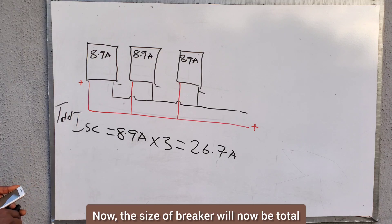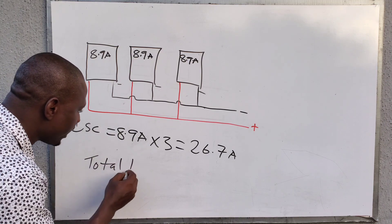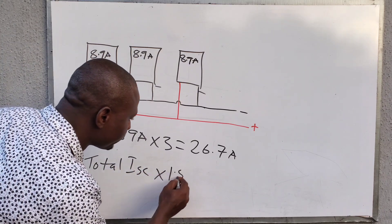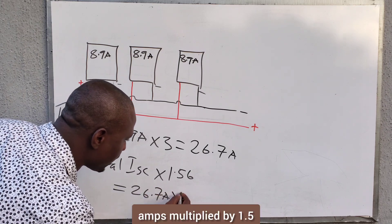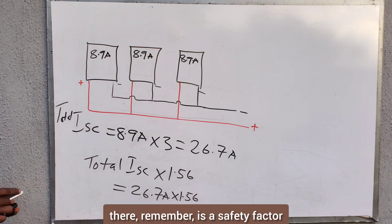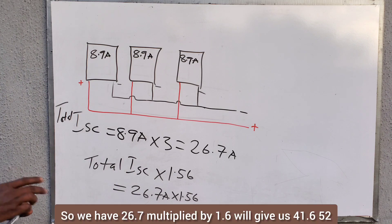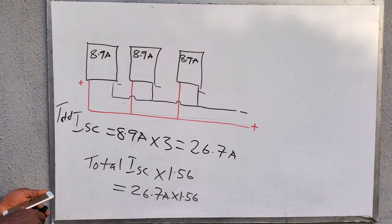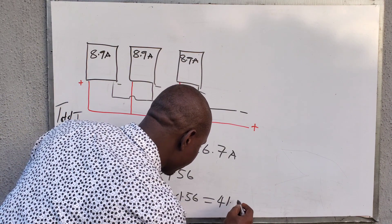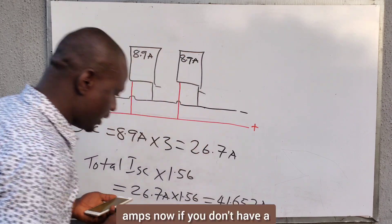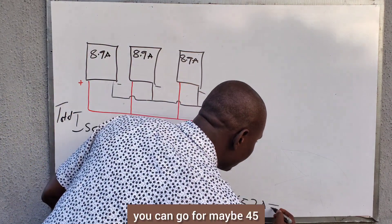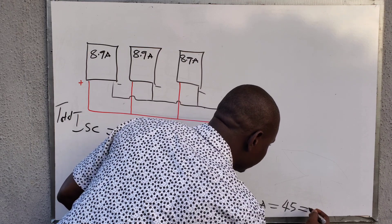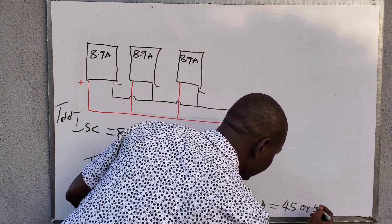The size of breaker will now be the total ISC multiplied by 1.56 — the safety factor. So 26.7 amps × 1.56 = 41.652 amps. If you are not able to get a 41 amp breaker, you can go for maybe 45 amps or a 50 amp breaker.